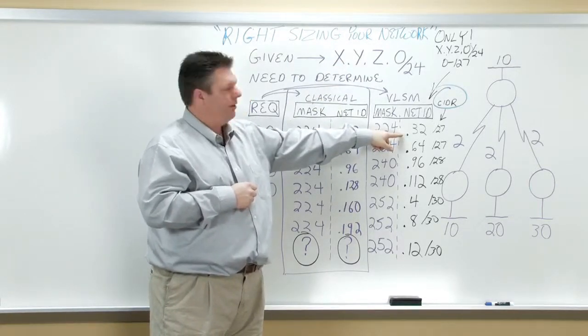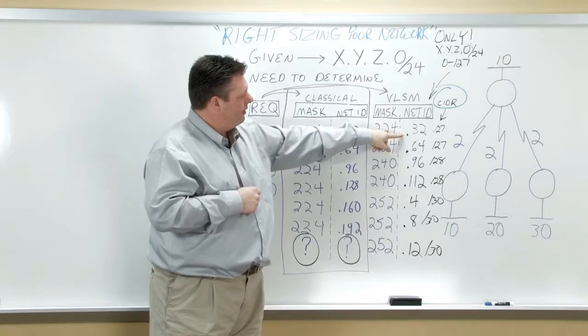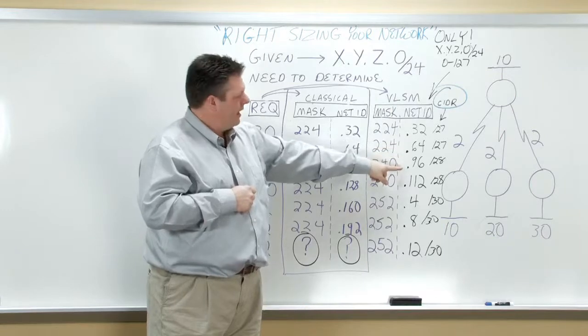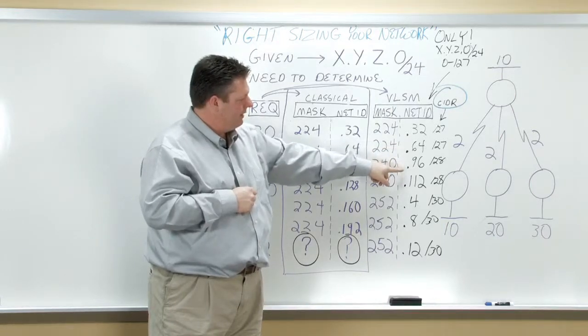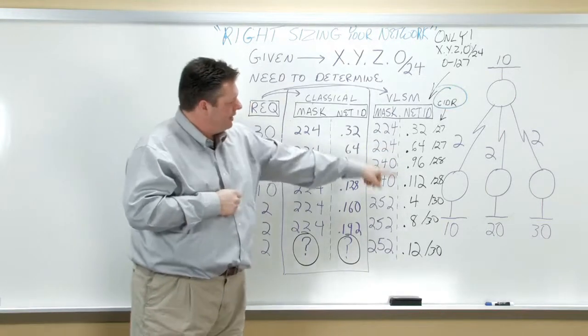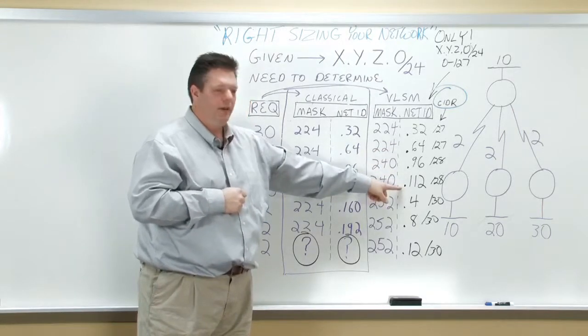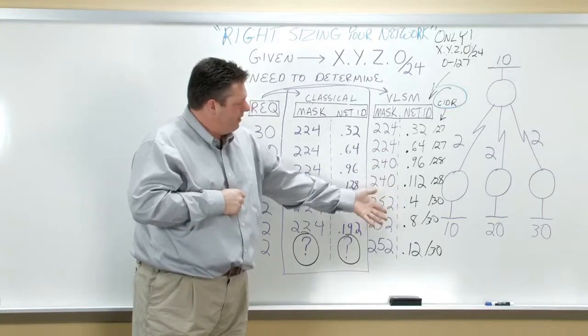Okay, and then of course that'll take all the way up to 95. Now I go to dot 96, but I don't need to go dot 32 because I'm using a 240 mask, so it goes to dot 112. And then of course,